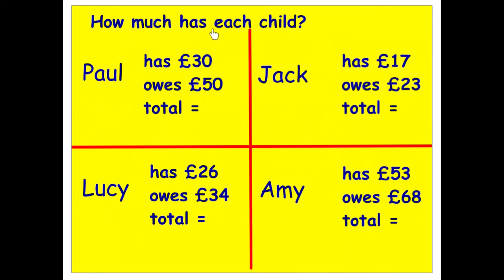How much does each child have? Paul has thirty pounds but he owes fifty, so the sum is thirty minus fifty. Taking away thirty puts us on zero, and we still need to take away another twenty to reach fifty altogether, so Paul has minus twenty, or negative twenty pounds.